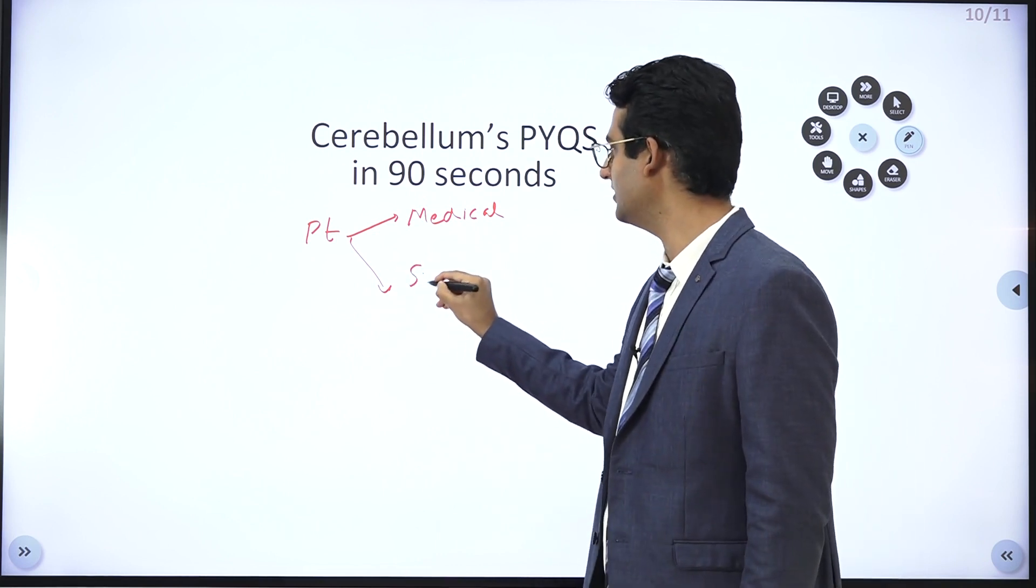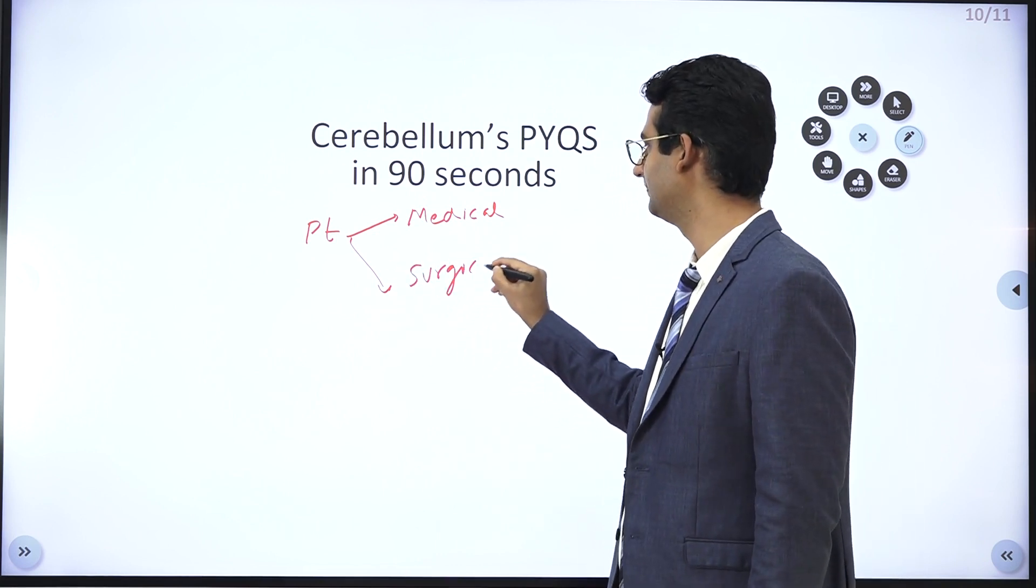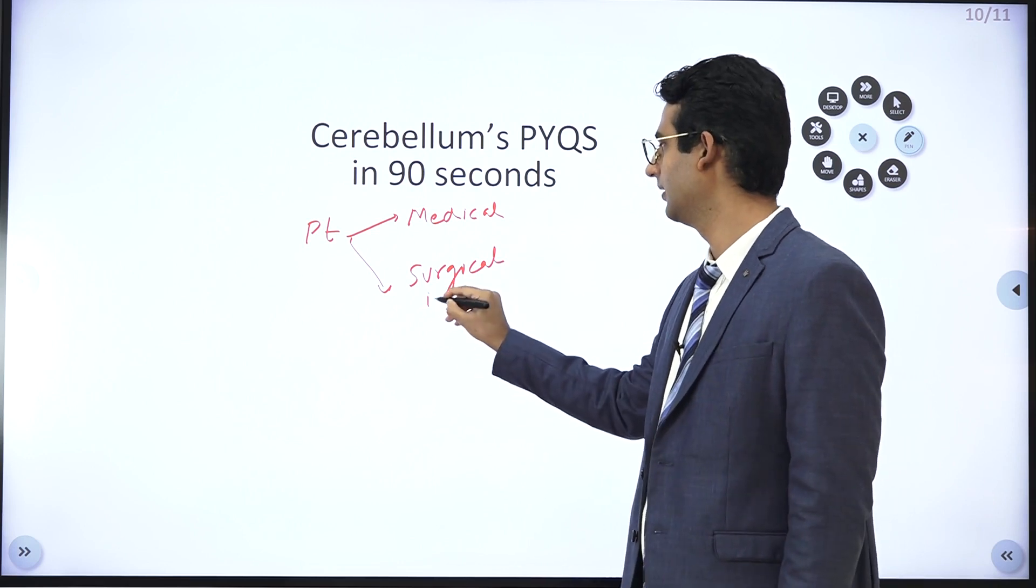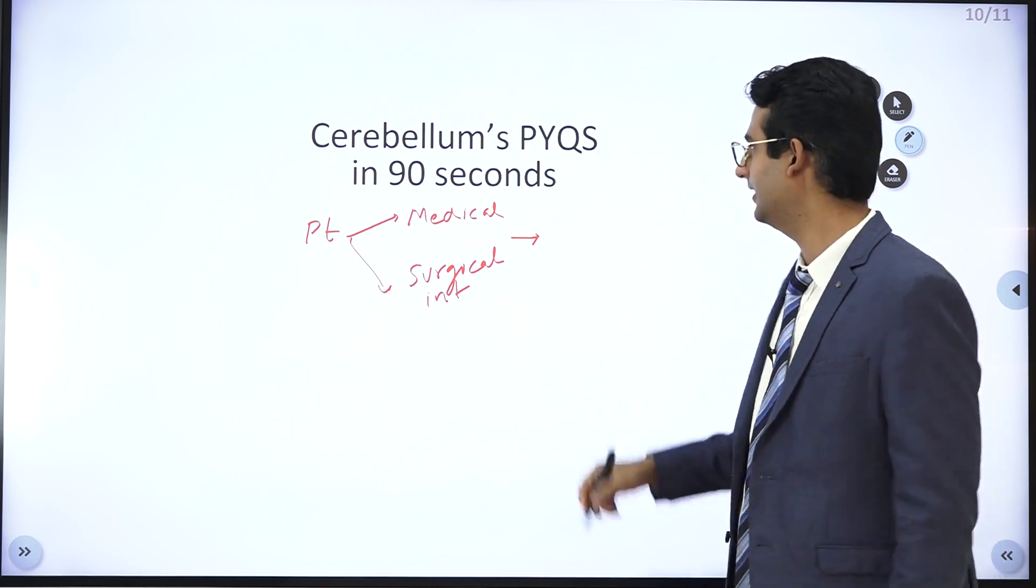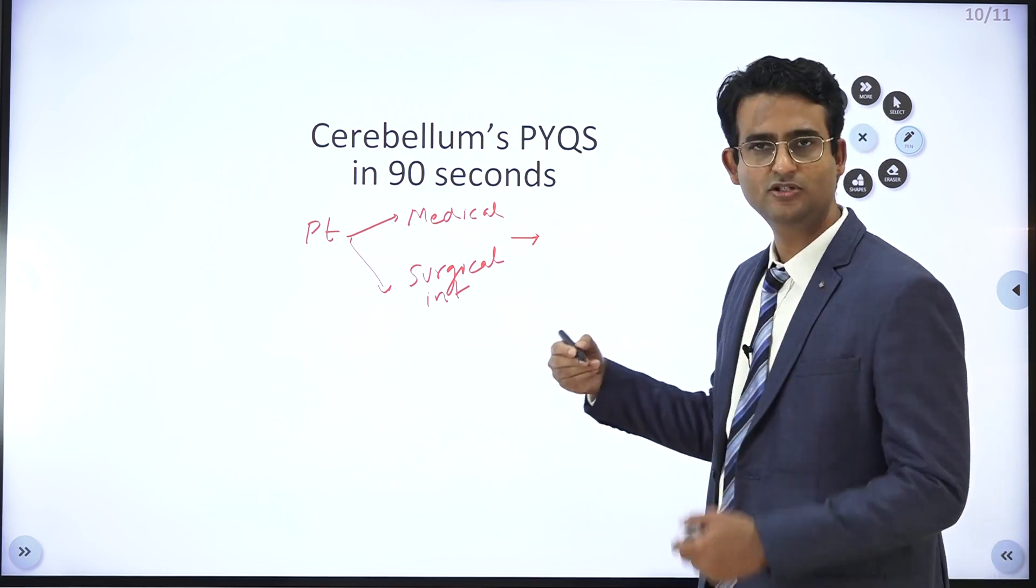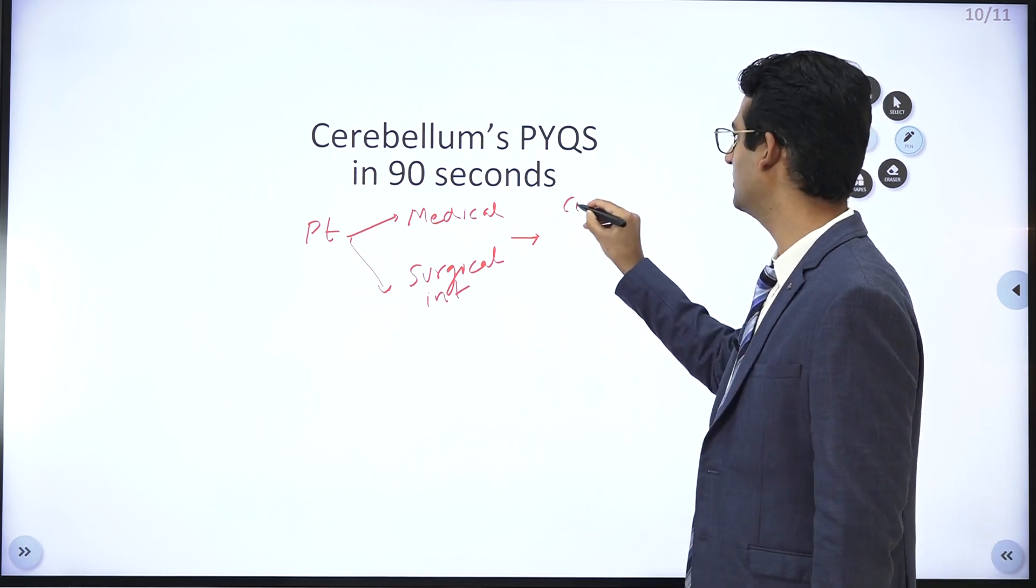Or the patient had a surgery, surgical intervention, and then they will say that the patient suddenly developed disturbance of consciousness. They'll say the patient appears confused.